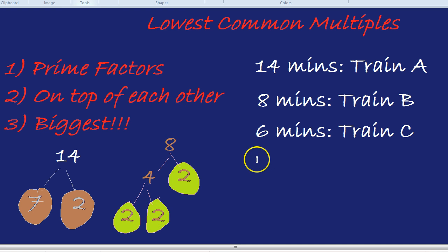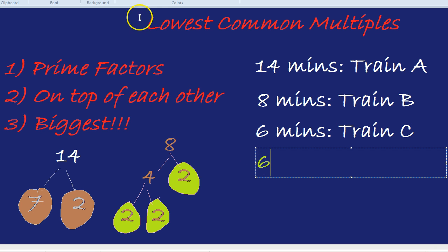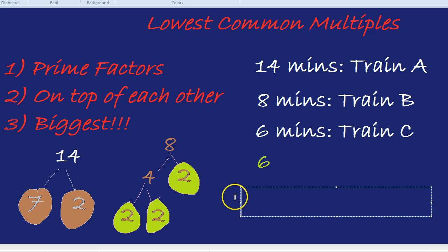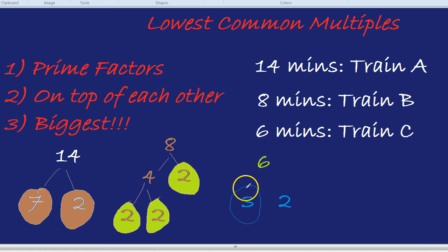And finally, let's do 6, train C. 6 is just 3 times 2. Highlighting those, they're both prime, 3 times 2.